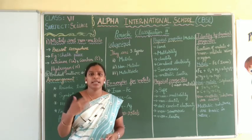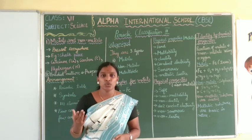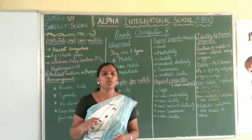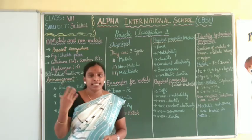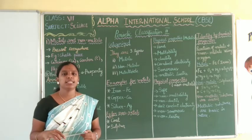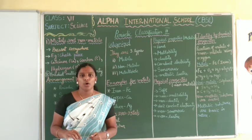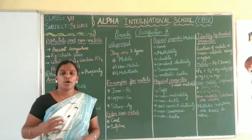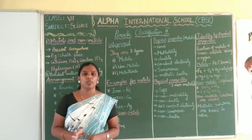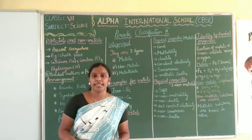Before, there were 45 periodic tables with only old elements. As years went by, new elements were discovered. So we need a modern periodic table. Scientists took modern research and made a modern periodic table. In the modern periodic table, there are nearly 118 elements present.